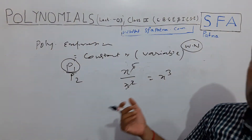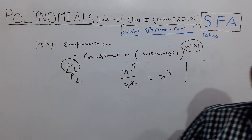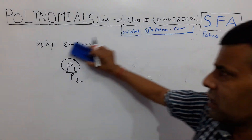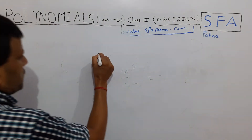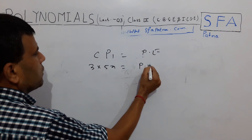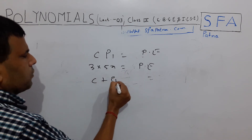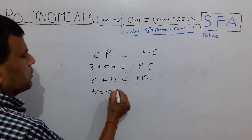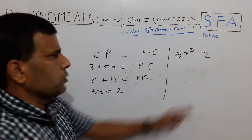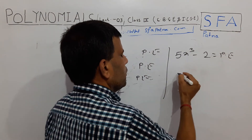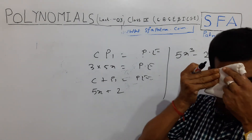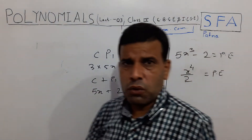If we multiply a constant C into a polynomial P1, the result gives a polynomial expression. For example, 3 into 5x gives a polynomial expression. Similarly, adding a constant term to a polynomial — such as 5x plus 2 — gives a polynomial expression. Subtracting a constant — such as 5x³ minus 2 — also gives a polynomial expression. Dividing by a constant — such as x⁴ divided by 2 — also gives a polynomial. So performing any mathematical operation with a constant term in a polynomial expression poses no problem.